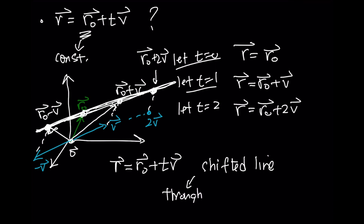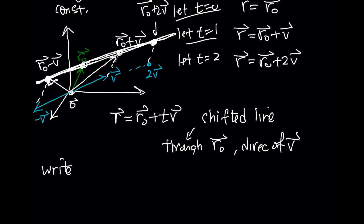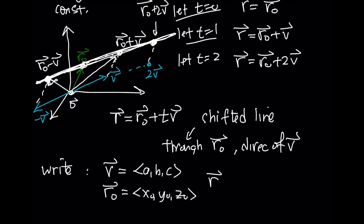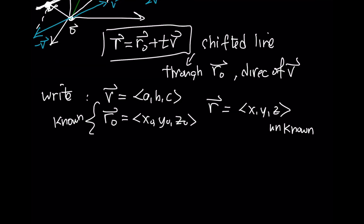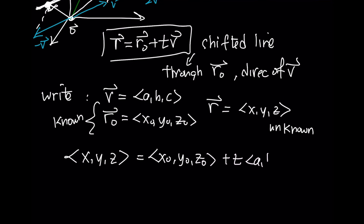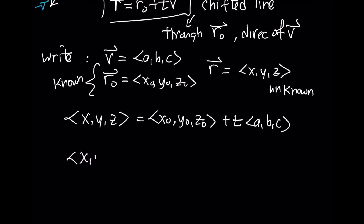Let's say that V has components A, B, and C. R0 has components X0, Y0, and Z0. And R is X, Y, Z — these two are vectors you know, and R is the unknown vector corresponding to coordinates of points on the line. What we'll have is the vector equation X, Y, Z equals X0, Y0, Z0 plus T times A, B, C. Using vector properties, we can combine those to get X0 plus AT, Y0 plus BT, and Z0 plus CT.